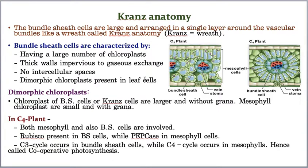When the same leaf contains two different types of chloroplasts, it is called dimorphic chloroplasts. The bundle sheath or Kranz cells have large chloroplasts without grana, while mesophyll cells have chloroplasts with grana. This is a key feature of C4 plants.